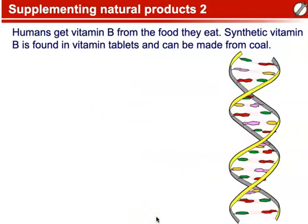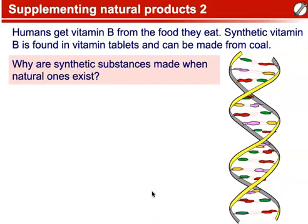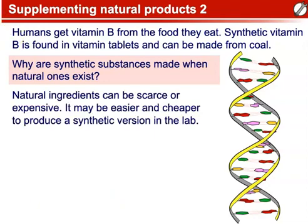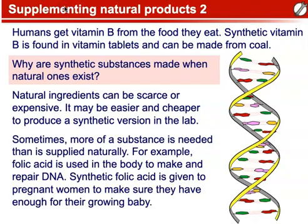Humans get vitamin B from the food that we eat. Synthetic vitamin B is found in vitamin tablets and can be made from coal. So why are synthetic substances made when natural ones exist? Natural ingredients can be scarce or expensive, and it may be easier and cheaper to produce a synthetic version in the lab. Sometimes more of a substance is needed than is supplied naturally. For example, folic acid is used in the body to make and repair DNA, and synthetic folic acid is given to pregnant women to make sure they have enough for their growing baby.